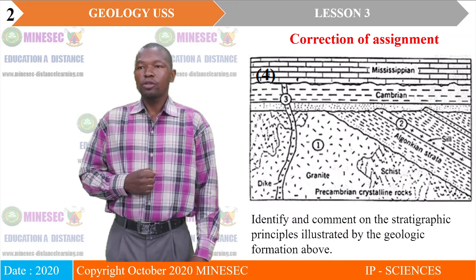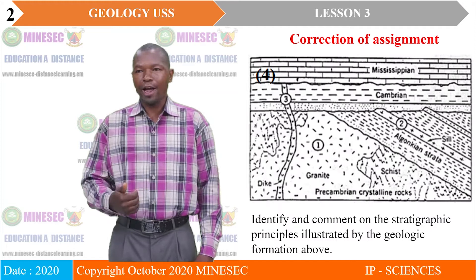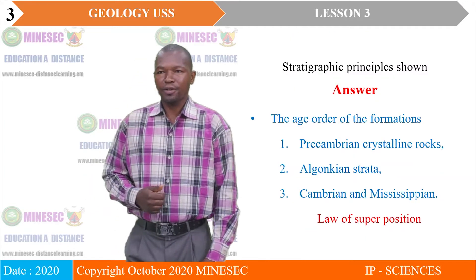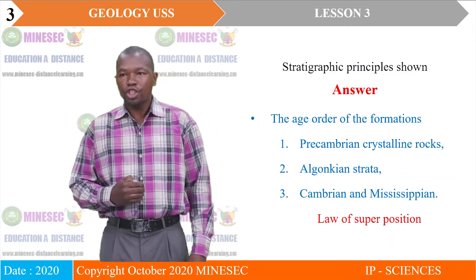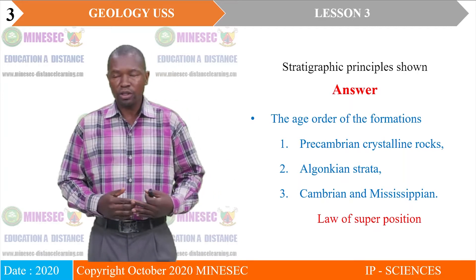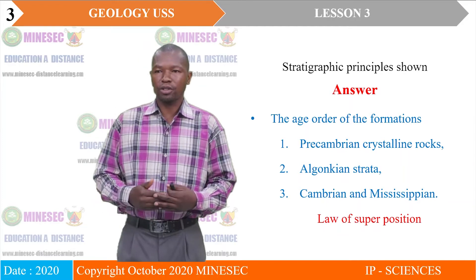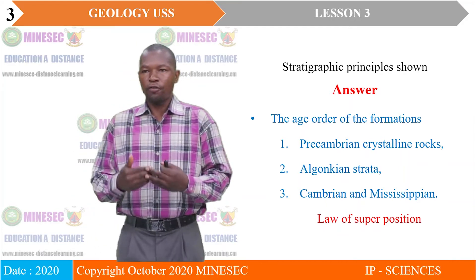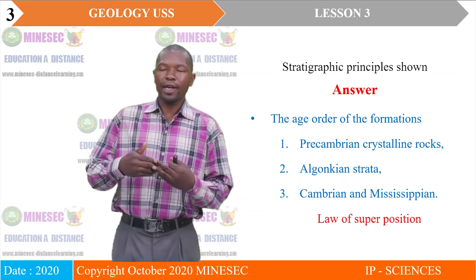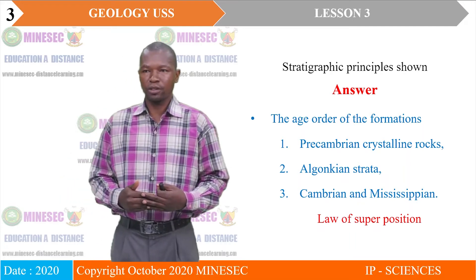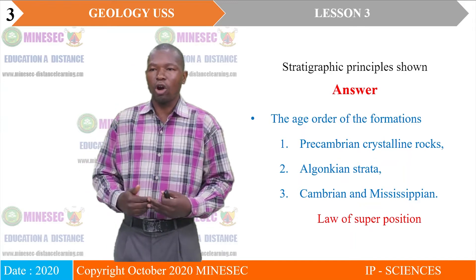With respect to that observation, practically, we are expected to have answers like this. If you look at that formation, you will realize that the layers are ordered: Precambrian crystalline rocks are formed first, followed by the Abolkian strata, then we have the Cambrian and the Mississippian formations. Practically, that illustrates the law of superposition.